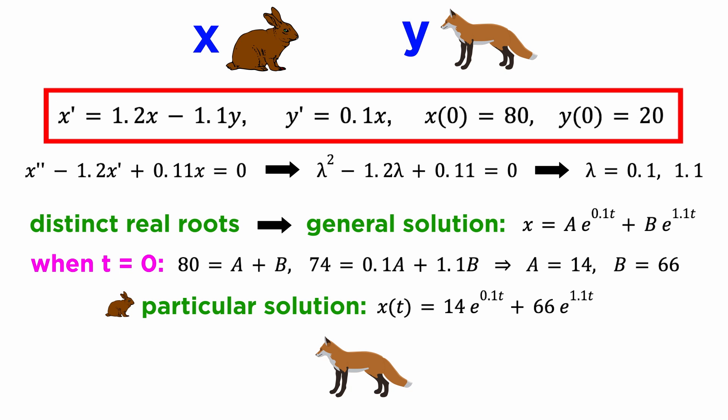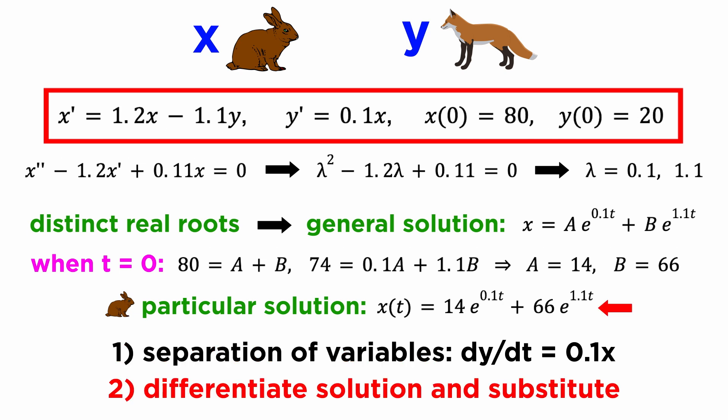We now need to recover the fox population, y of t, which we could do by either using separation of variables on the dy/dt differential equation, or by differentiating our solution and substituting into the dx/dt differential equation.